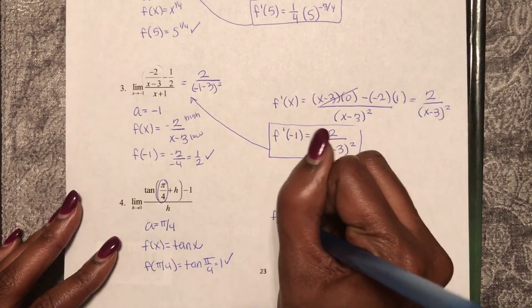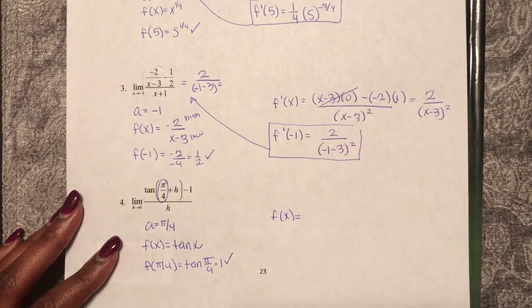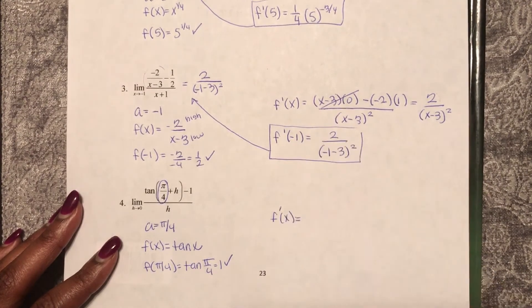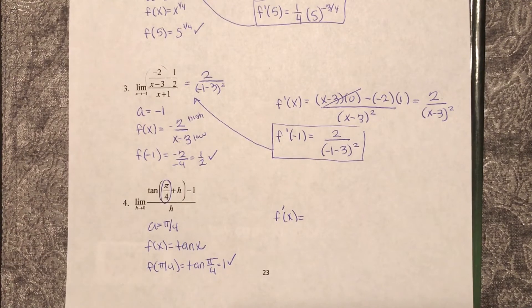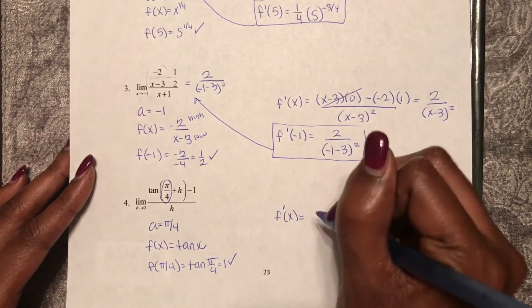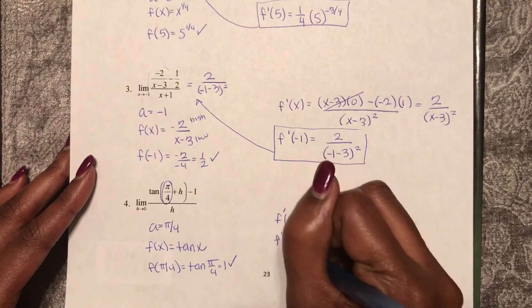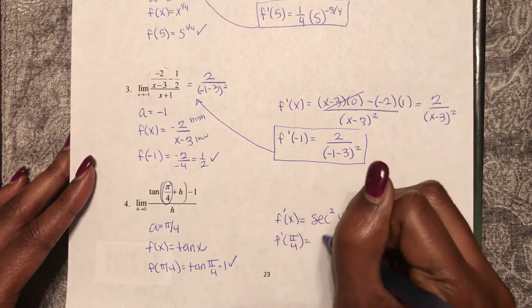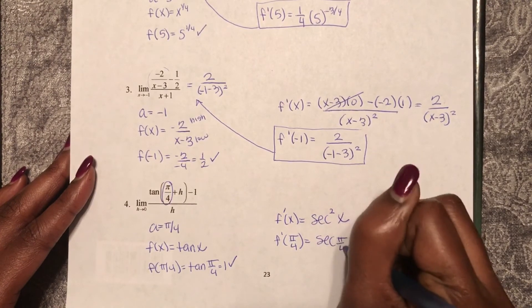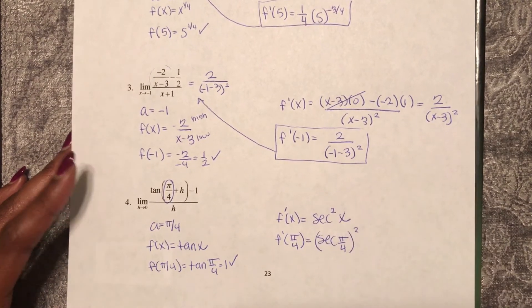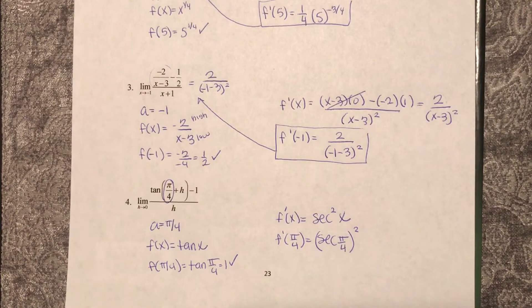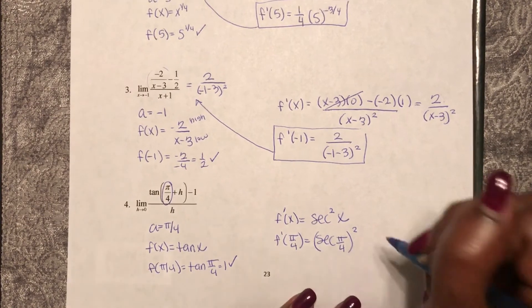So now, f prime of x, using our trig derivatives. The derivative of tangent is secant squared x. So f prime of pi over 4 is secant of pi over 4, whatever that value is squared. So secant squared just means we're squaring our secant.